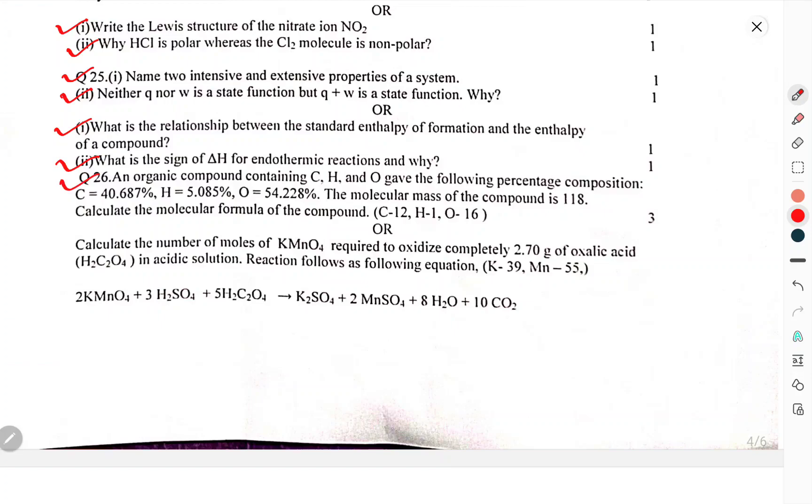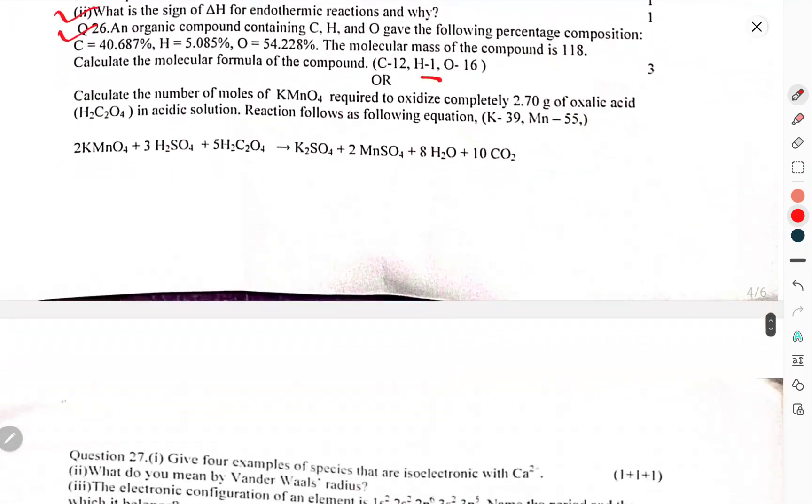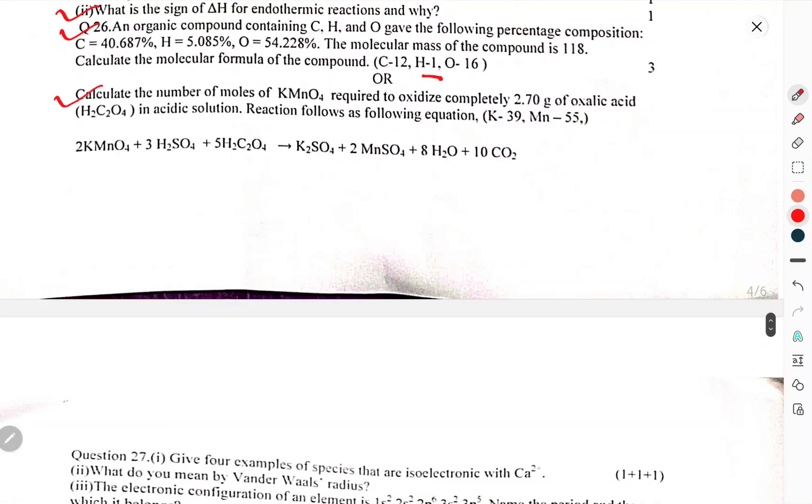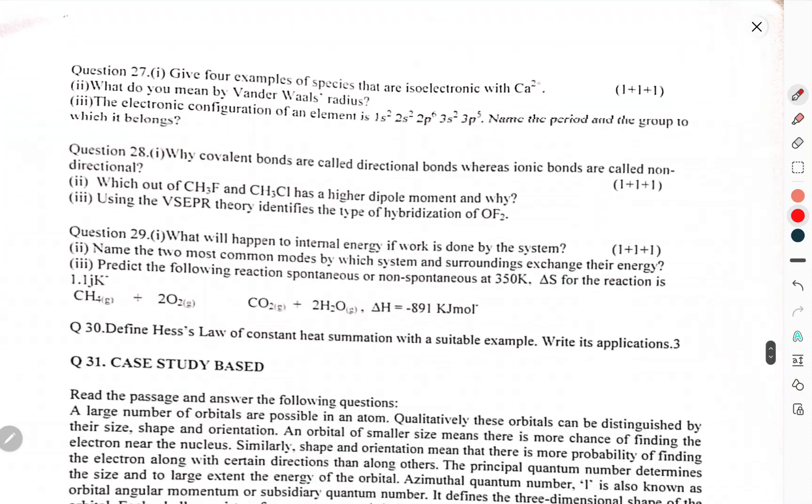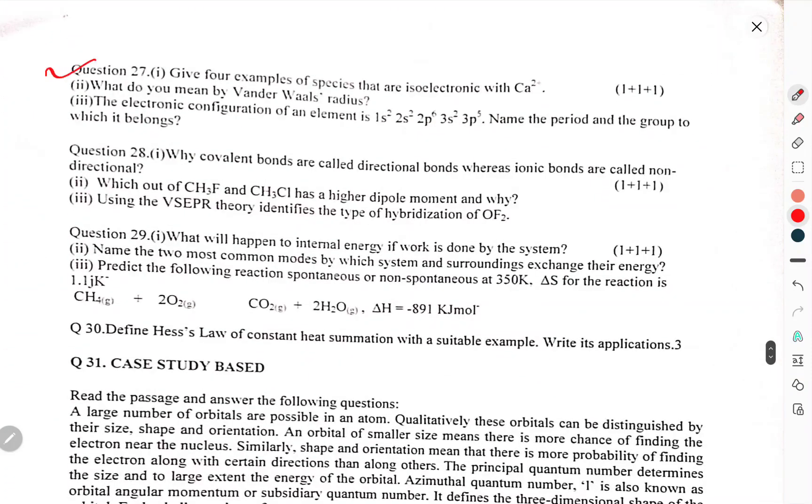An organic compound containing carbon, hydrogen, and oxygen gave the following percentage composition. Calculate the molecular formula of this. Calculate the number of moles of KMnO4 required to oxidize completely 2.70 g of oxalic acid in acidic solution. Reaction follows the following equation. Question 27: Give four examples of species that are isoelectronic with Ca2+.